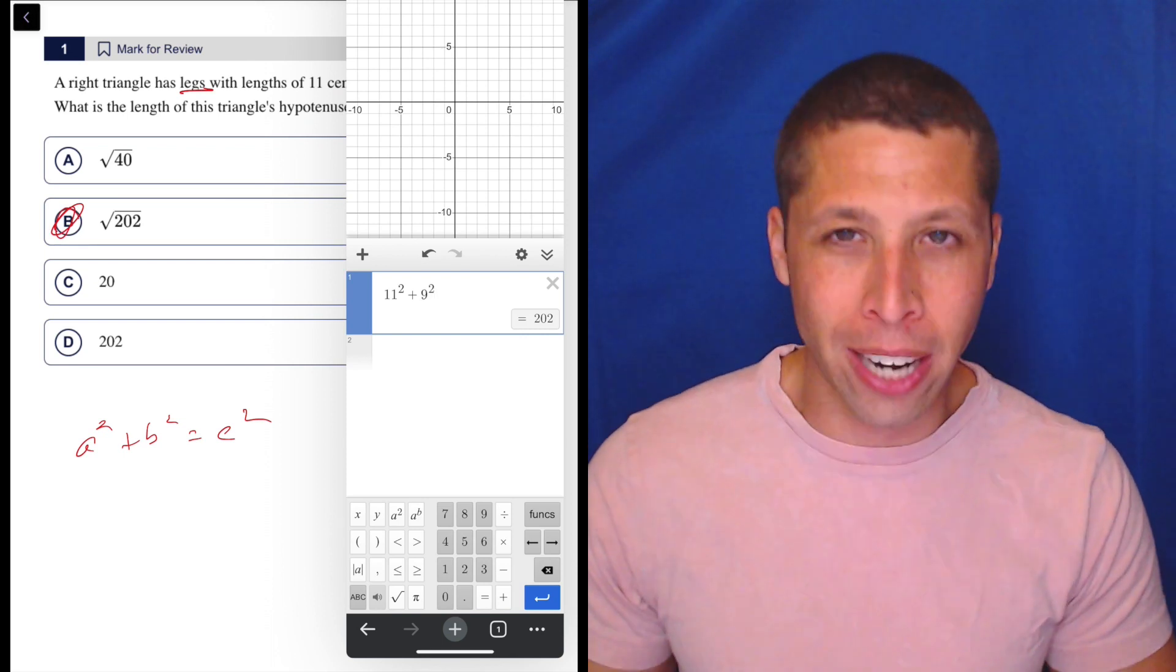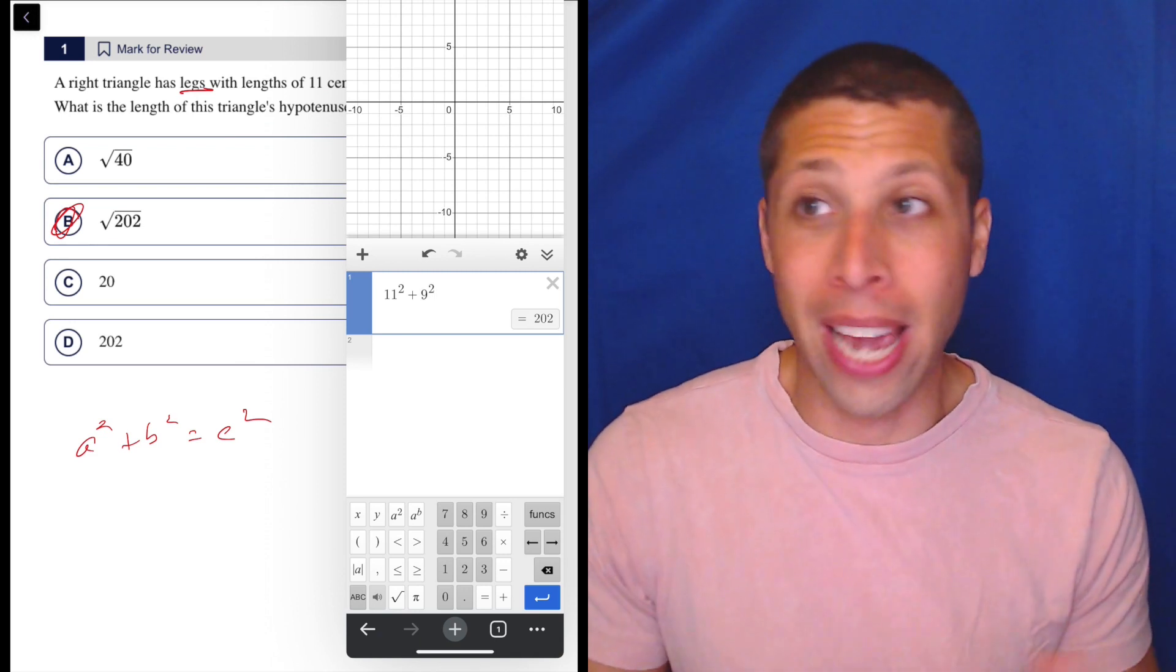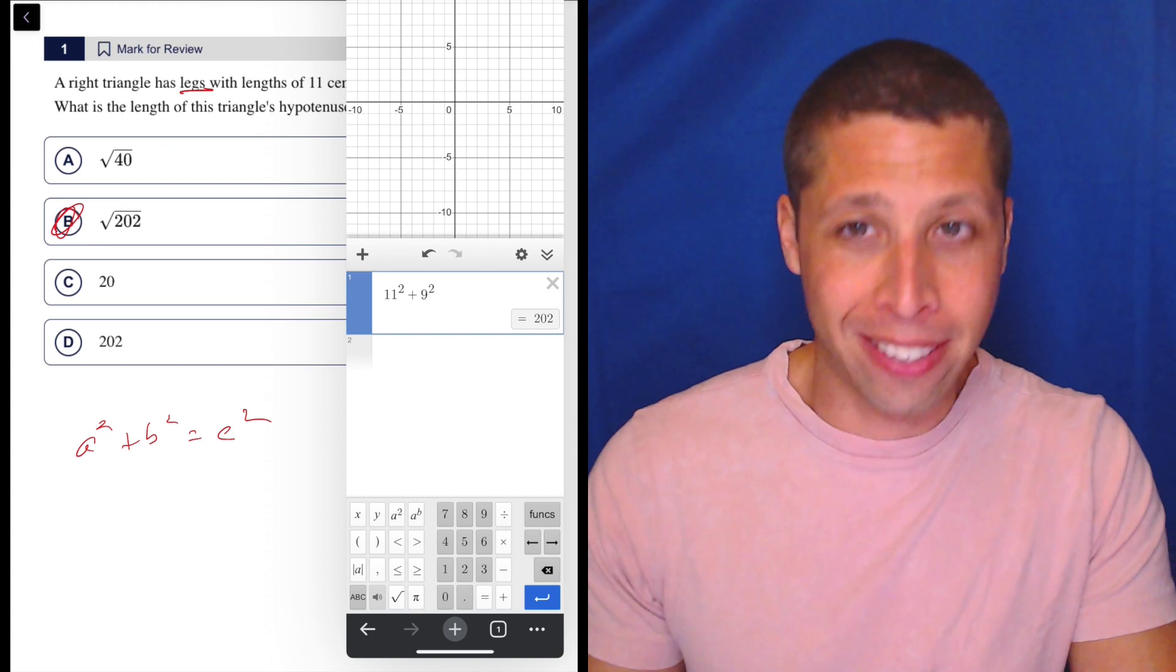You don't need to be simplifying radicals on the SAT. You should be able to just think about the decimals because we have the calculator for every question.